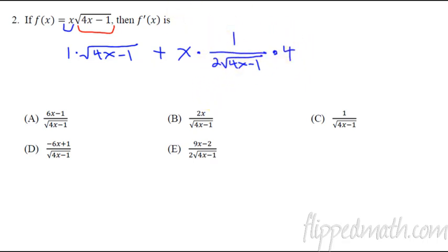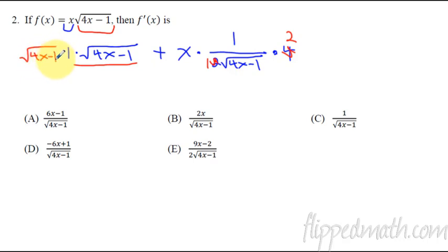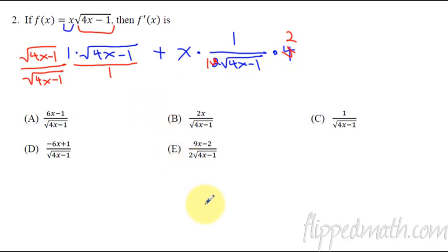Now you want to reduce: the 2 can become 1, the 4 can become 2, so it simplifies a bit. Then you'll want to multiply top and bottom by the square root of 4x minus 1. If you do that with the first fraction, you'll need the same denominators in order to add two fractions together.